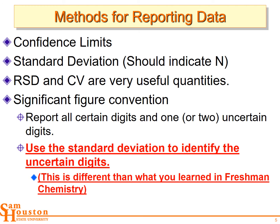Methods for reporting data: we certainly use the confidence limits. Standard deviation — if you're just going to report it, it's good practice to indicate the number of data points used in calculating it. Relative standard deviation and CV are also very useful quantities. Then we have the significant figure convention where we report all the certain digits and one or two uncertain digits. We use the standard deviation to identify all the uncertain digits — this is very different from what you learn in freshman chemistry.